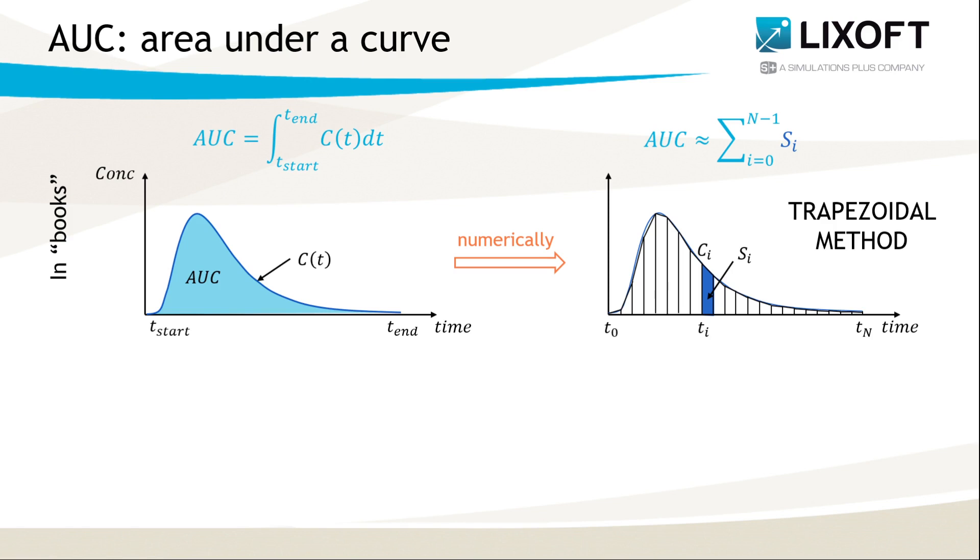To compute this area numerically, time is divided into small intervals and the AUC is approximated by a sum of trapezoidal type sub-areas s-i. And these areas are formed by slicing the whole area at each point t-i of the grid. A surface of each of these sub-areas is computed using concentration values at adjacent points, so here it will be t-i and t-i plus 1.